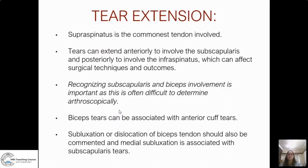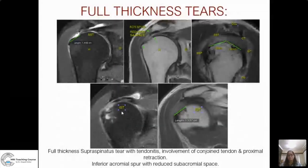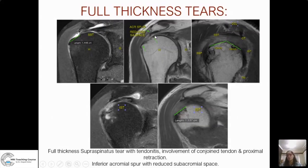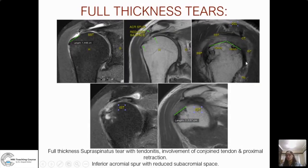Tear extension needs to be mentioned. Tears can extend from the anterior supraspinatus tendon into the subscapularis, or from the supraspinatus into the conjoined and infraspinatus tendon. It is important to recognize subscapularis or biceps tendon involvement, as these structures are often difficult to assess arthroscopically. Biceps tears can be associated with anterior supraspinatus and subscapularis tears. An important finding of a subscapularis tear is medial subluxation of the biceps tendon, seen on axial images. On sagittal images, the conjoined tendon may appear thickened with irregularity at the insertion, while posterior infraspinatus fibers may remain intact.